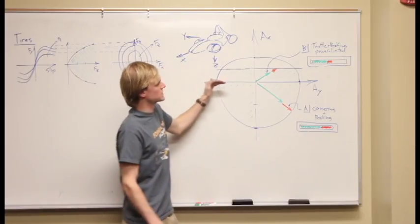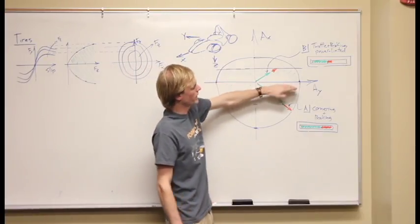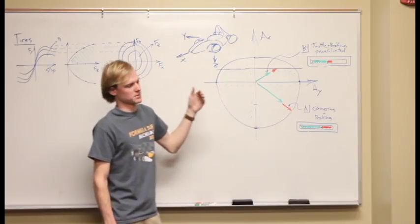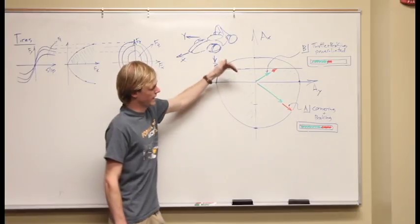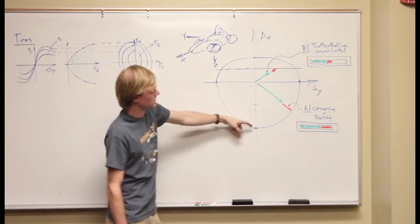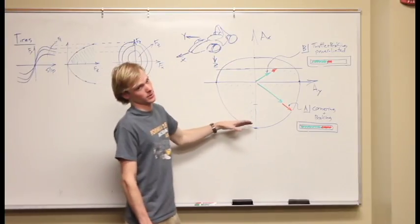So we have in steady state cornering, if we're only going around the corner, we have some maximum lateral acceleration that the car is able to sustain. And if we only brake in a straight line, we have some maximum braking that the car is able to sustain.